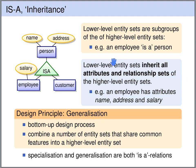It is important to note that the higher level entities can belong to zero or more of the lower level entity sets. For instance, a person might neither be an employee nor a customer. A person could also just be an employee or just a customer. But a person could also be an employee and a customer at the same time, belonging to more than one of the lower level entity sets.